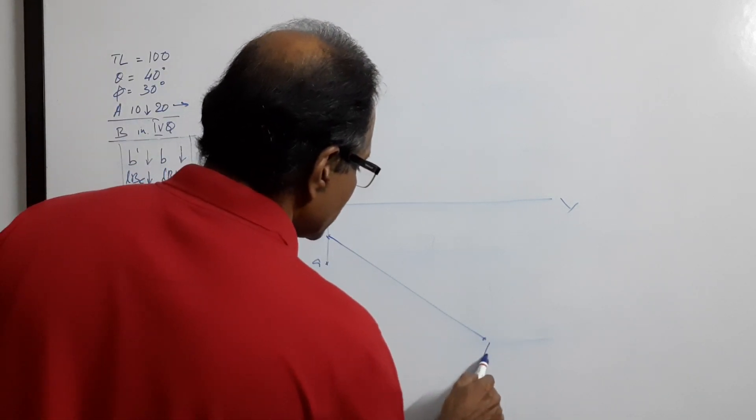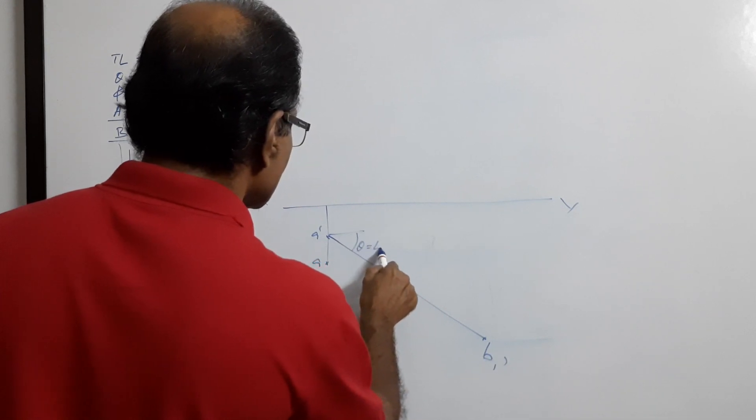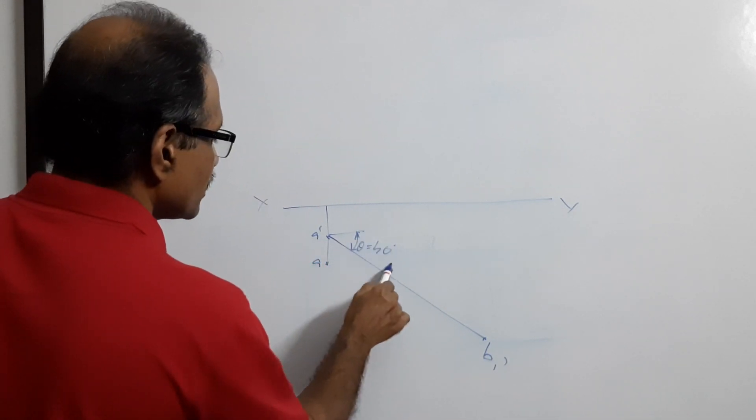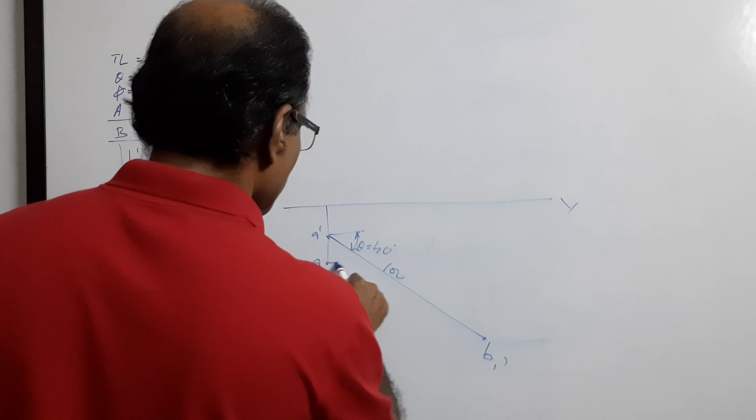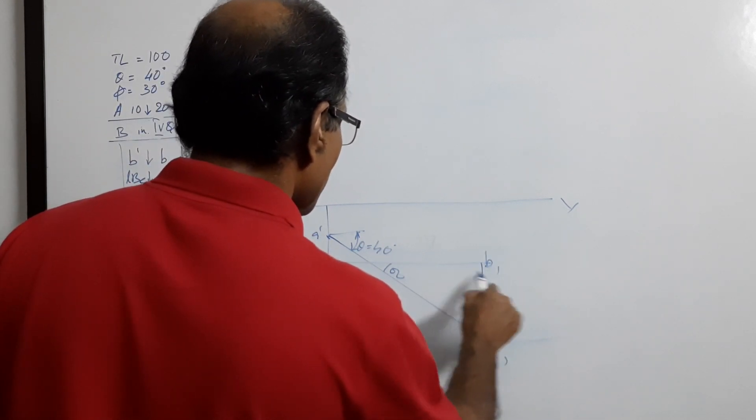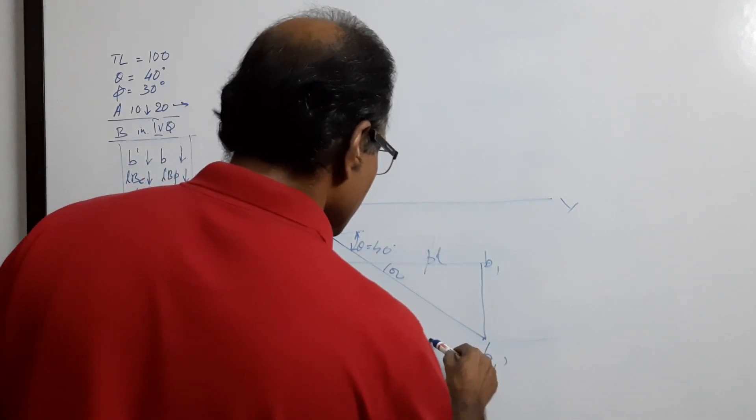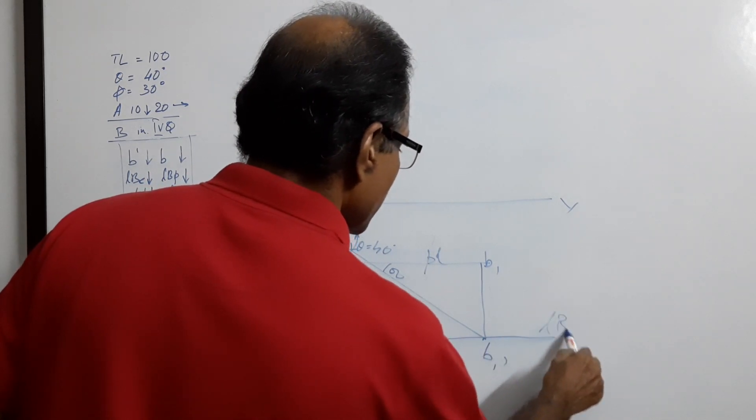40 degrees, B1 dash. Theta equals 40 degrees, 100, B1, plan length L B E.